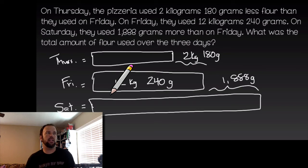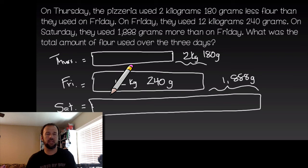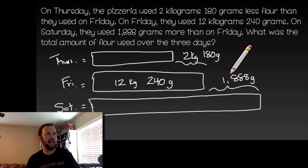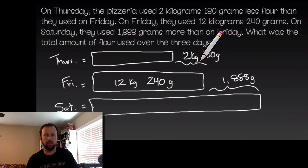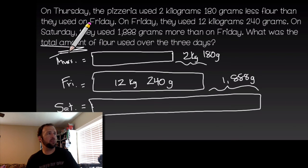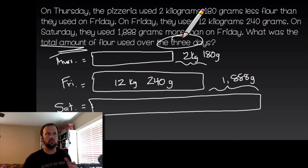We don't know Thursday's or Saturday's exact amounts — we only know Friday's. So for Saturday we start with Friday's base and add 1888 grams more. For Thursday we start with Friday's base and subtract 2 kilograms 180 grams. Then we add all three totals together to get the total amount used over the three days. Go ahead and work through that, then we'll come back and compare answers.